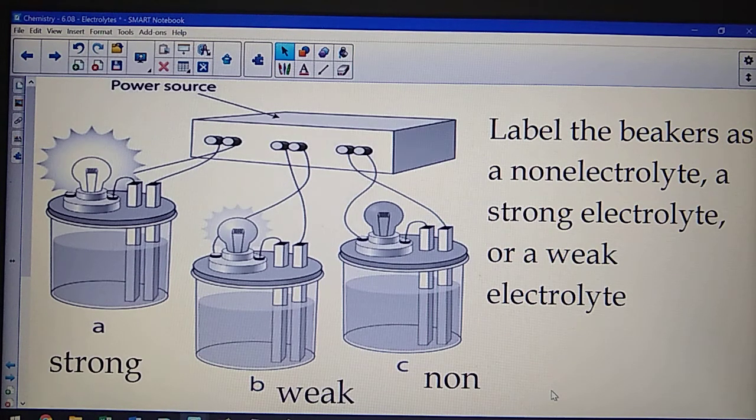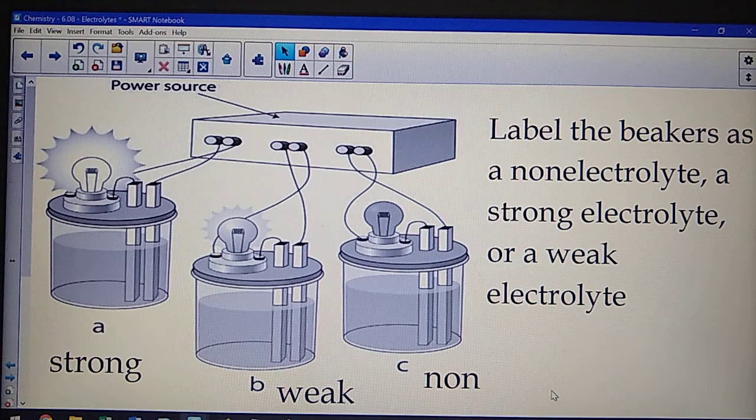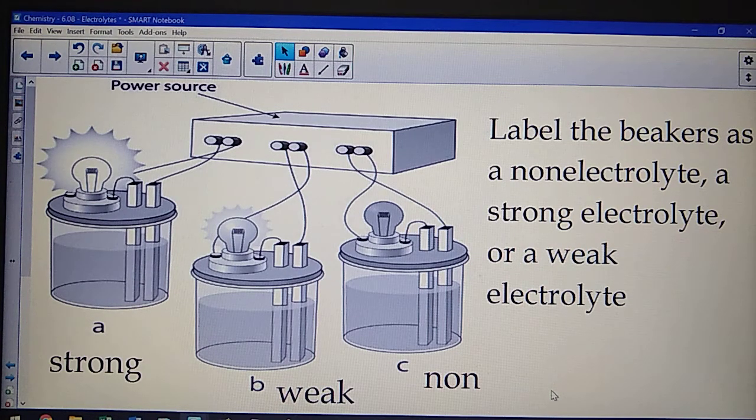Well, with A, we have a lot of current going through it, which would lead us to indicate probably a lot of ions were there, and therefore, it's likely to be a strong electrolyte. With B, it is conducting electricity, so it must be an electrolyte, but it's not conducting a lot of electricity, so probably only some of the molecules were broken up to ions. It's probably a weak electrolyte. And finally, C, there's nothing, we don't see anything at the bottom there. It is dissolved, but no electricity being conducted, so therefore, it must be a non-electrolyte.